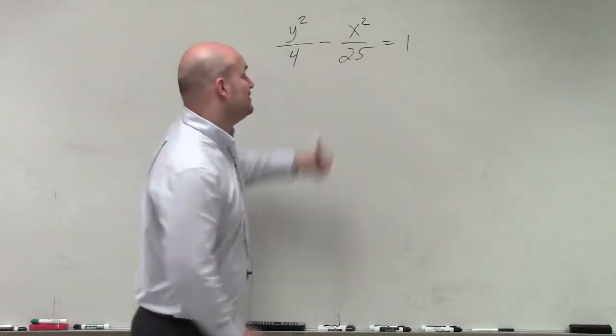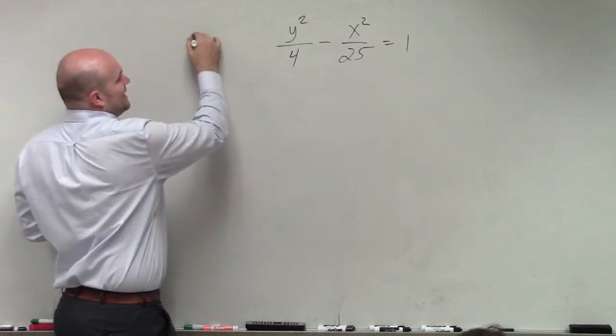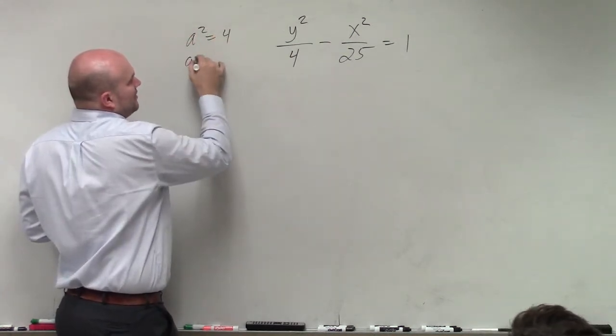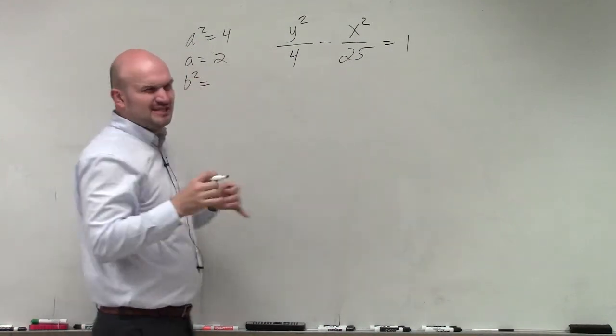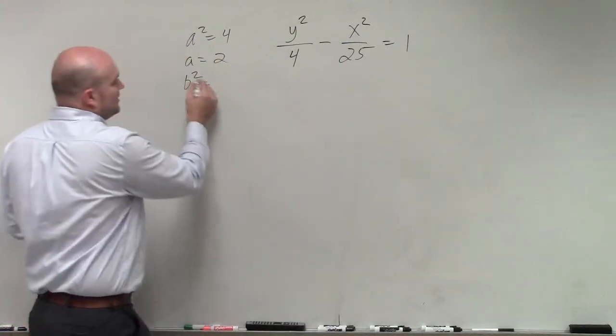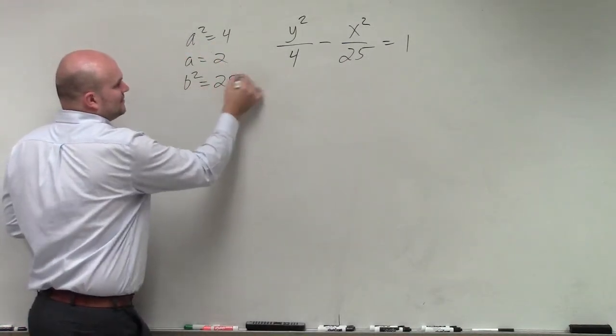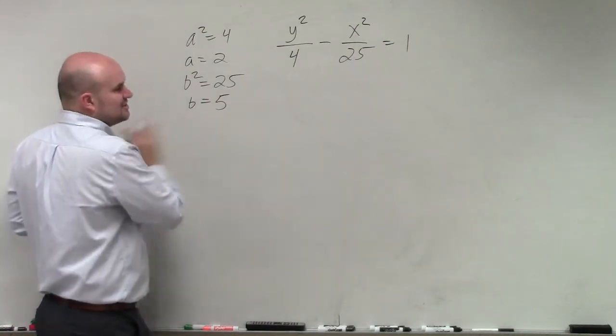Therefore, I know the first term is going to be my a squared. So I could say a squared is equal to 4. Therefore, a is equal to 2. It is plus or minus 2, but we're just going to be dealing with the distance. So we're not going to deal with direction, but yes, it is plus or minus 2. b squared equals 25. And so therefore, b equals 5, or the distance b is just going to be positive 5.